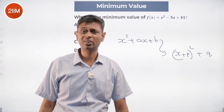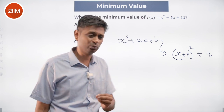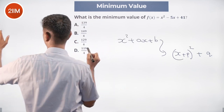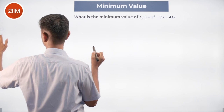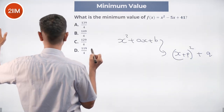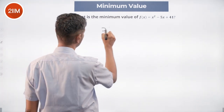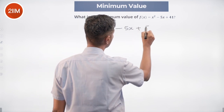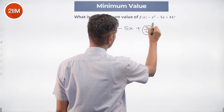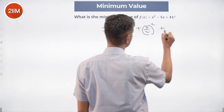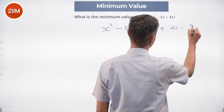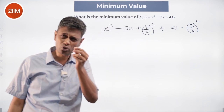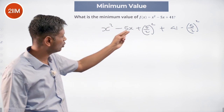Here, 2ax equals 5x, so a equals 5/2. We take the expression and write it as x squared minus 5x, which becomes (x minus 5/2) whole squared, plus a balancing term. We add and subtract (5/2) squared.